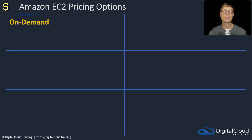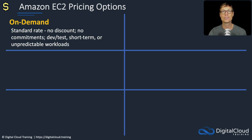Firstly, let's look at the different types of pricing model. We've got on-demand. On-demand is just the standard rate — there's no discount, no commitments. You can use it for things like dev/test workloads, anything that's short-term or unpredictable. You're not committing but you're also not getting any discounts. It's just a standard rate — very flexible and very useful.